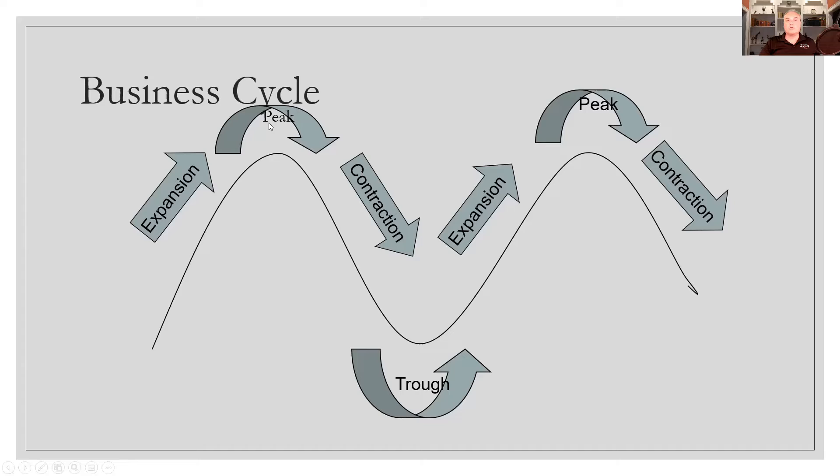That typically reaches a peak. And then there's a contraction. If that contraction is short term, we don't give it any name at all. If it is longer than two quarters and the National Bureau of Economic Research agrees, then we would call that a recession. If it lasts longer than a year, typically that would be called a depression.